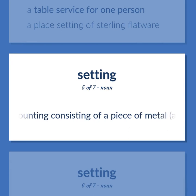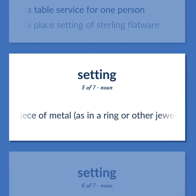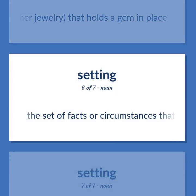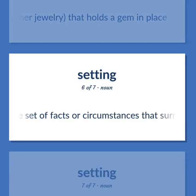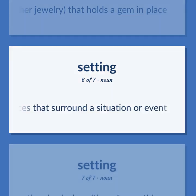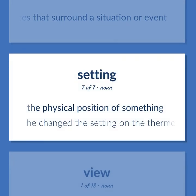Setting: A mounting consisting of a piece of metal, as in a ring or other jewelry, that holds a gem in place. The set of facts or circumstances that surround a situation or event. The physical position of something. He changed the setting on the thermostat.